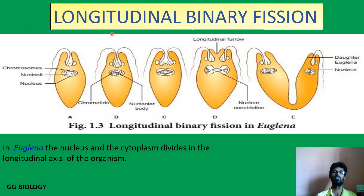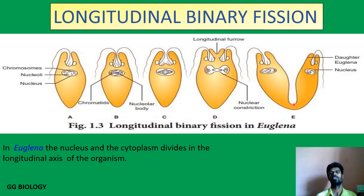The third type is longitudinal binary fission, which happens in the case of Euglena. Here the plane of division takes place from top to bottom — it occurs at the top and leads to the bottom position — and hence this axis is called the longitudinal axis. Thereby one parental cell divides into two daughter cells. The progression continues and finally from one cell two daughter cells are produced. Such a division, whereby the occurrence takes place along the longitudinal axis, is called longitudinal binary fission.